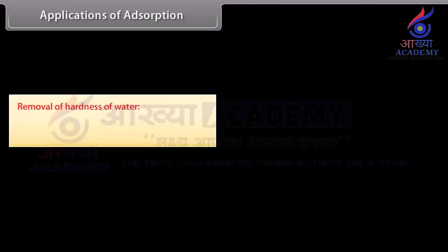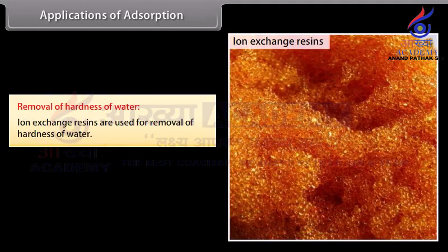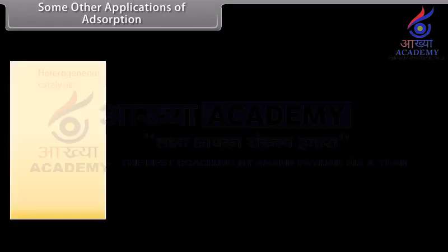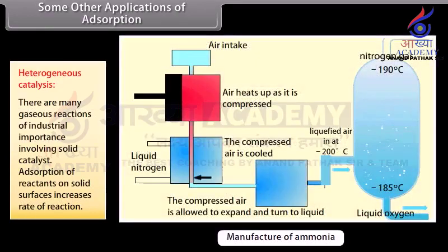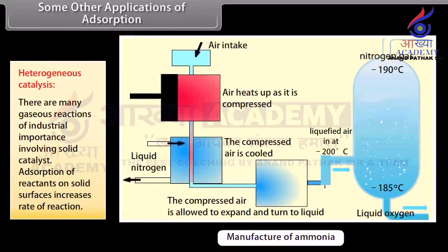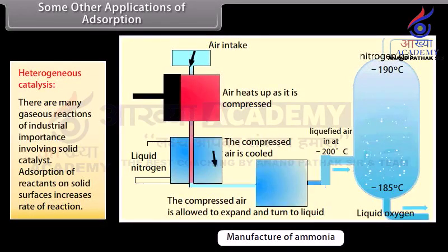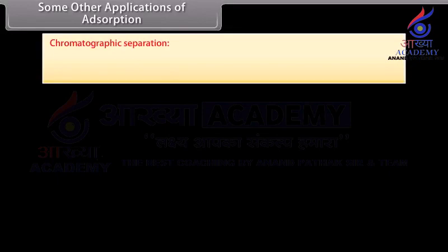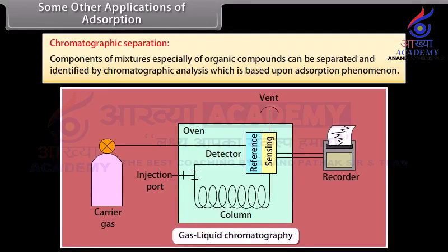Removal of hardness of water: ion exchange resins are used for removal of hardness of water. Heterogeneous catalysis: there are many gaseous reactions of industrial importance involving solid catalysts; adsorption of reactants on solid surfaces increases the rate of reaction, for example manufacture of ammonia, sulfuric acid, and hydrogenation of oils. Chromatographic separation: components of mixtures and organic compounds can be separated and identified by chromatographic analysis, which is based upon adsorption phenomenon — for example, thin layer chromatography, paper chromatography, and gas-liquid chromatography.